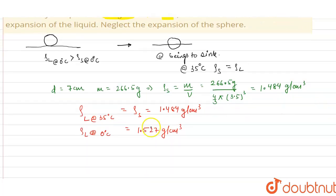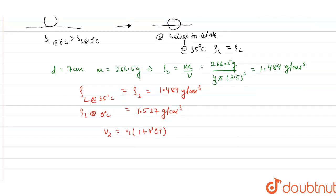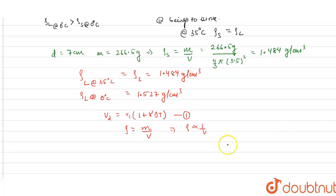Using the thermal volume expansion relation: final volume = initial volume × (1 + γ·ΔT). Since density is equal to mass divided by volume, and mass is constant, density is inversely proportional to volume. So we can write: 1/ρ_final = (1/ρ_initial) × (1 + γ·ΔT).